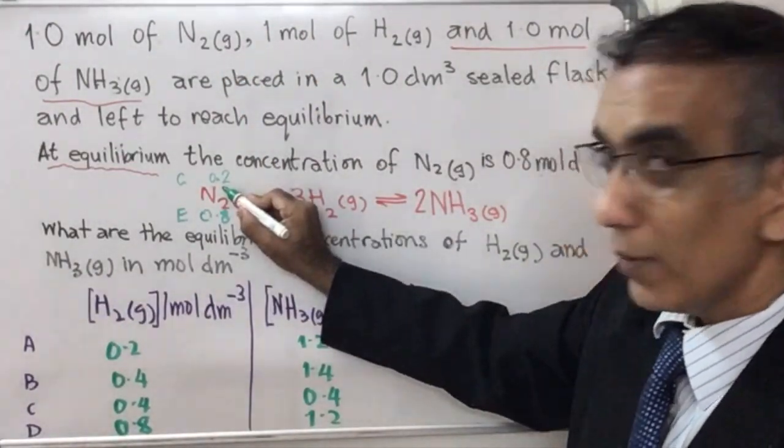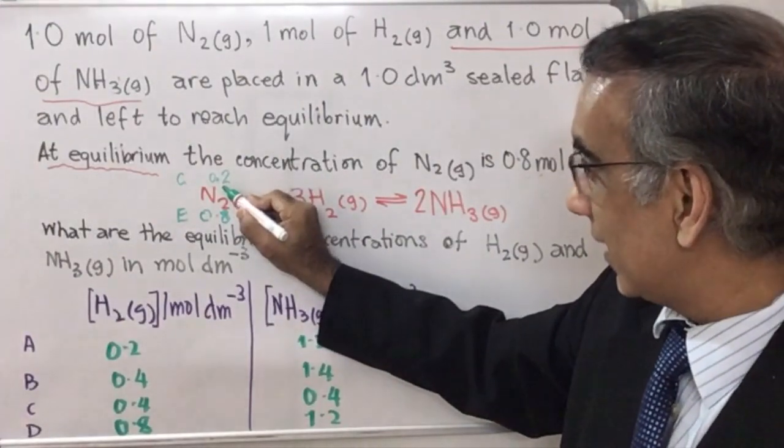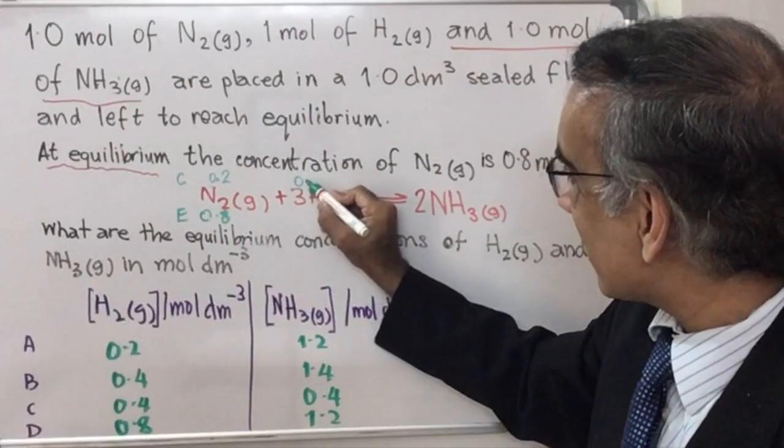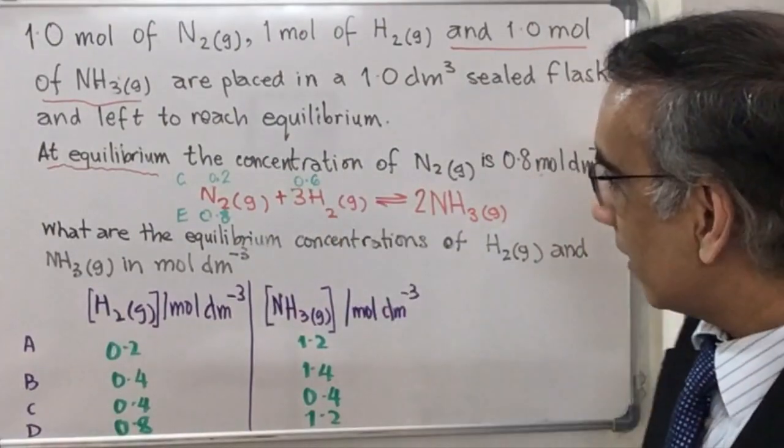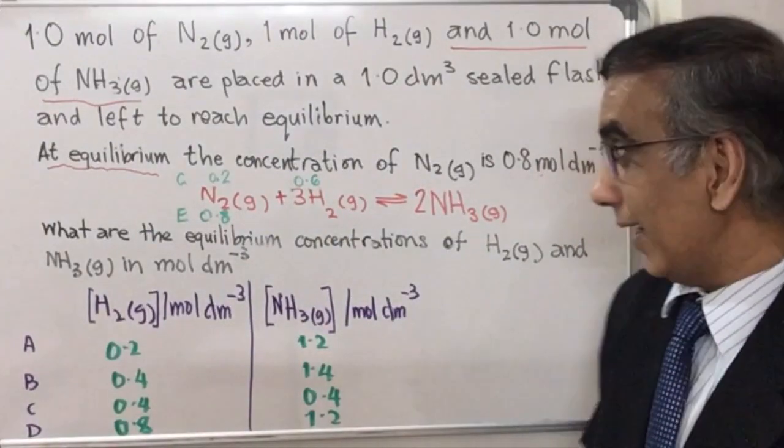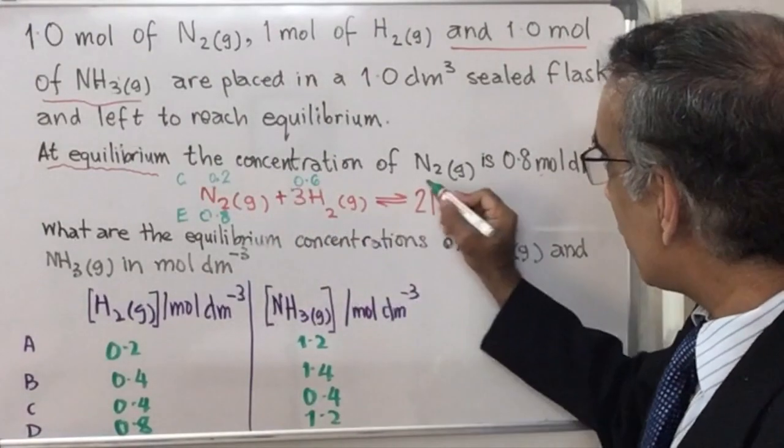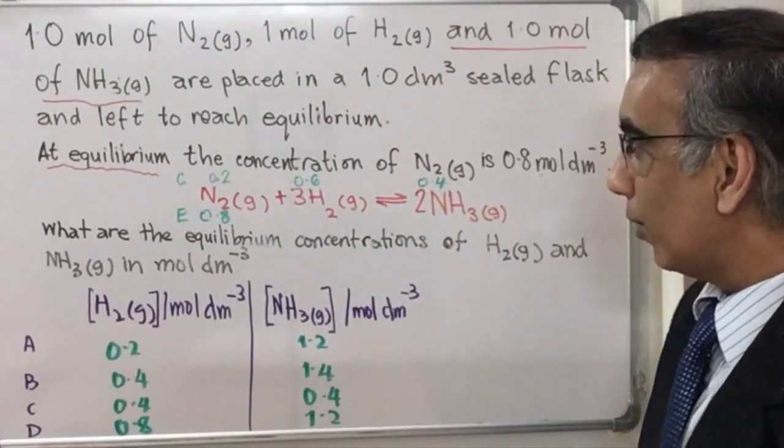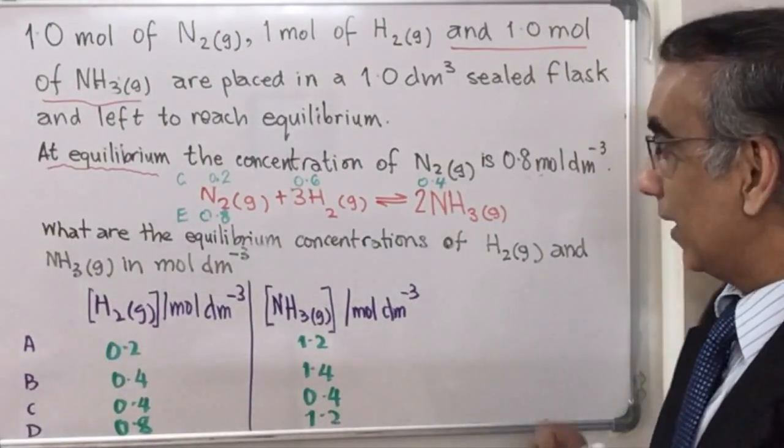And if 0.2 moles of nitrogen reacted, then with this mole ratio of 1 to 3, it means 0.6 moles of hydrogen would be reacted. And it also means, following that ratio, that you would get 0.4 moles of ammonia over on this side.